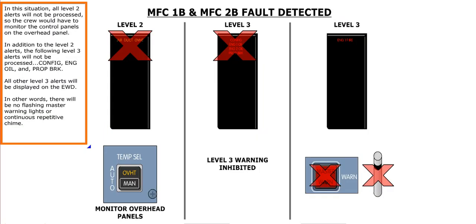In this situation, all level 2 alerts will not be processed, so the crew would have to monitor the control panels on the overhead panel. In addition to the level 2 alerts, the following level 3 alerts will not be processed: Configuration, engine oil, and propeller brake. All other level 3 alerts will be displayed on the EWD. In other words, there will be no flashing master warning lights or continuous repetitive chime.